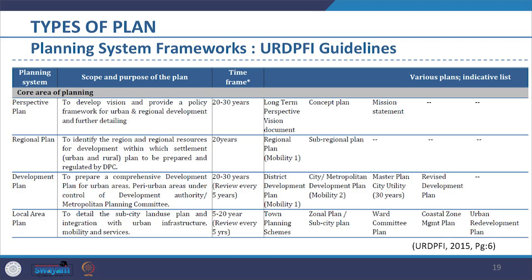Accordingly, in the URDPFI guidelines, as seen in the table from the guidelines, four core interdependent plan types have been identified: perspective plan with vision and policy orientation; regional plan with optimization of regional resources for development; development plan for comprehensive long-term settlement planning for urban and peri-urban areas; and local area plan within the framework of the development plan. Each is presented with its scope and purpose, timeframe and indicative list of plans.